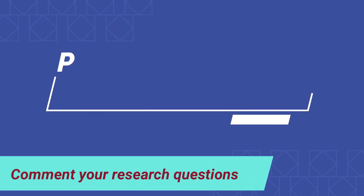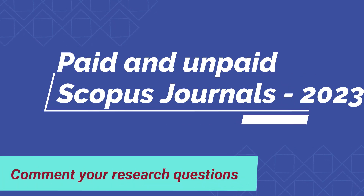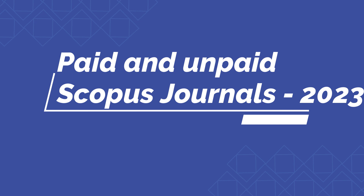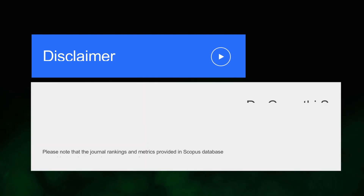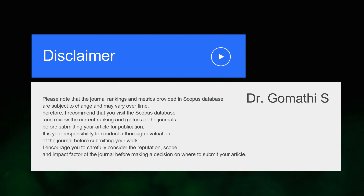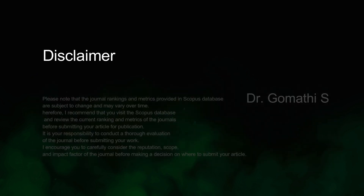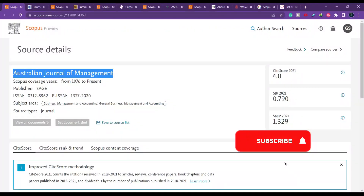Hi everyone, welcome back. In this video we will discuss paid and unpaid Scopus-indexed journals on management, mathematics, social science, and multidisciplinary topics. We will look into various aspects like duration of publication, duration of acceptance, scope of the journal, plagiarism policy, and how to contact the editor.